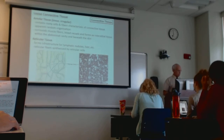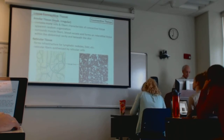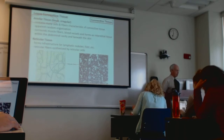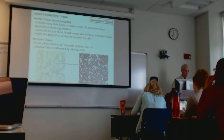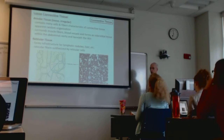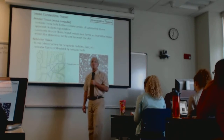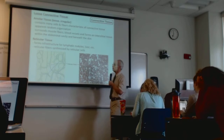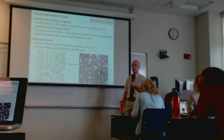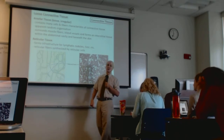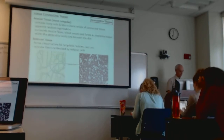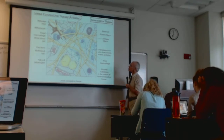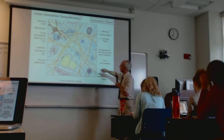Another tissue you should be able to recognize is areolar tissue — also called loose irregular connective tissue. 'Loose' suggests there's not a great abundance of fibers; 'irregular' means the fibers in that connective tissue are not in a parallel arrangement but are variously and desultorily arranged. This illustration shows areolar tissue with collagen fibers, elastin fibers, random placement of fat cells, and capillaries.